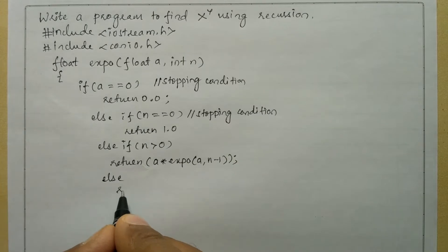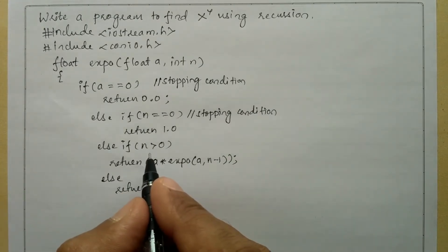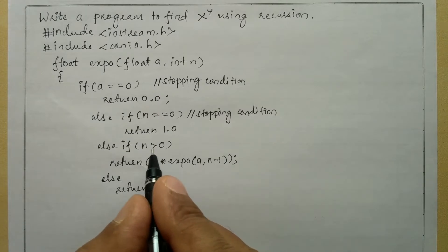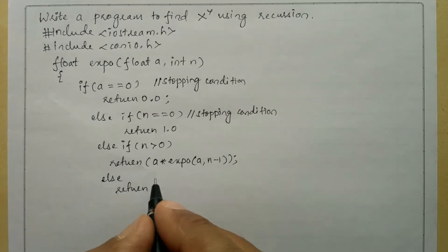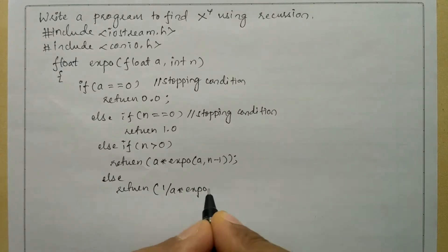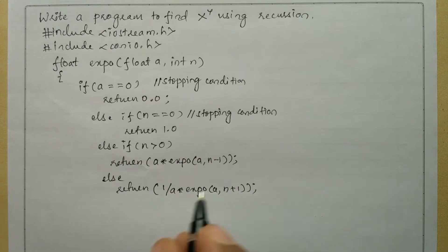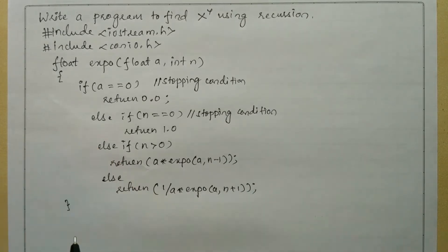If n is greater than zero is false, the else part executes. If the n value is less than zero — a negative exponent — it returns one divided by a multiplied by the function call expo(a, n+1), followed by a curly closing brace for the function definition.